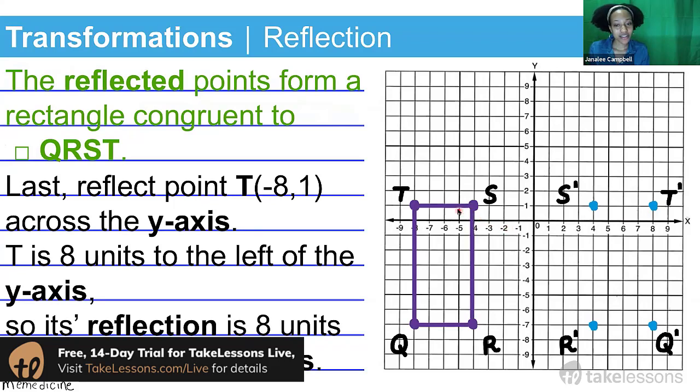Our original rectangle was rectangle QRST. And we're going to see now that the reflected points form a rectangle congruent to QRST. And when I say congruent, I mean it has the same dimensions.